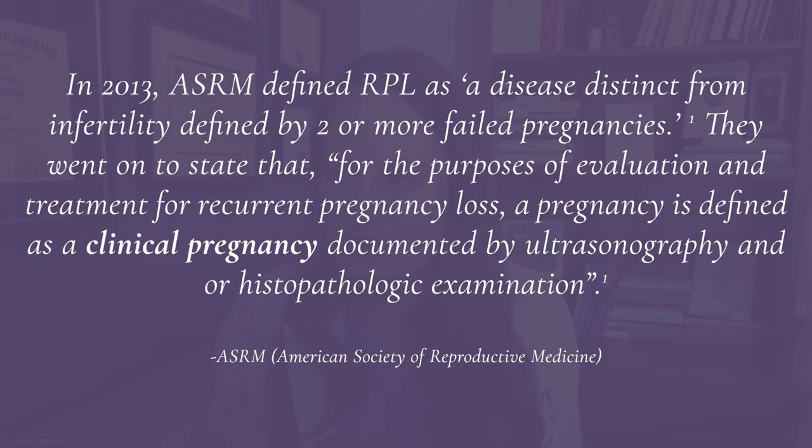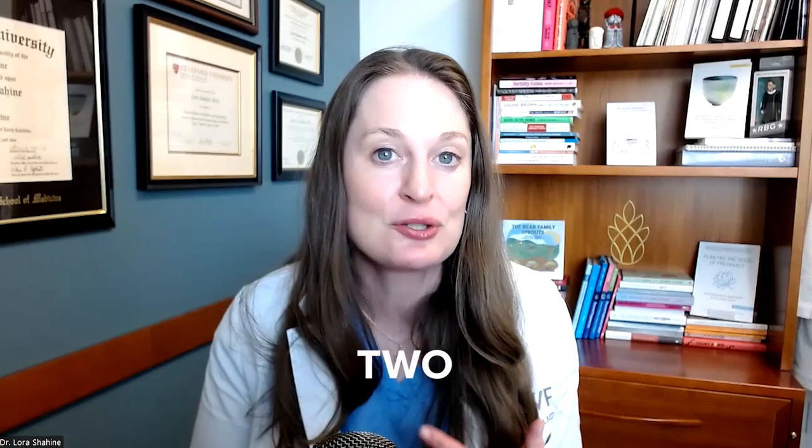In 2013, that changed. The American Society of Reproductive Medicine changed the definition of recurrent miscarriage. They defined it as a disease distinct from infertility, defined by two or more failed pregnancies — and for the purposes of evaluation and treatment, a pregnancy was defined as a clinical pregnancy documented by ultrasonography or histopathologic examination. So ASRM said it doesn't have to be consecutive and it doesn't have to be three — you can do testing and evaluation after two clinical miscarriages. That was a revolution, and a lot more people got testing and care than before, but it still left out people having biochemical miscarriages.